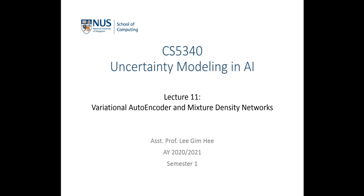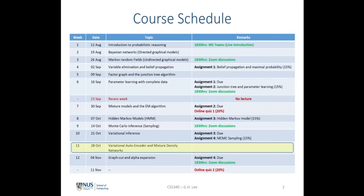Hello everyone, welcome to the lecture on uncertainty modeling in AI. Today we are going to talk about variational autoencoders and mixture density networks. Today's lecture is a little bit special where I'm going to talk about the relation or how graphical modeling concepts that we have been learning can be applied to the popular deep learning methods commonly used today in research.